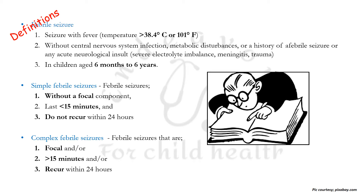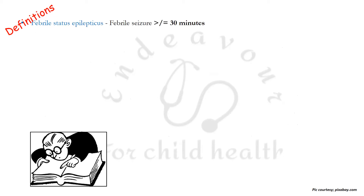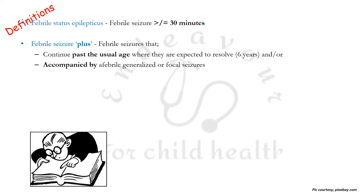Complex febrile seizures are focal and/or more than 15 minutes and/or they recur within 24 hours. Febrile status epilepticus is a febrile seizure lasting more than or equal to 30 minutes. Febrile seizure plus is a febrile seizure that continues past the usual age up to which seizures are expected to resolve — that is, six years.